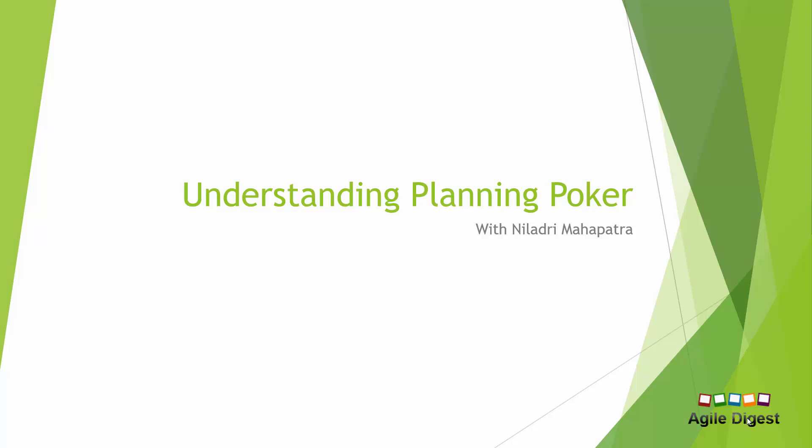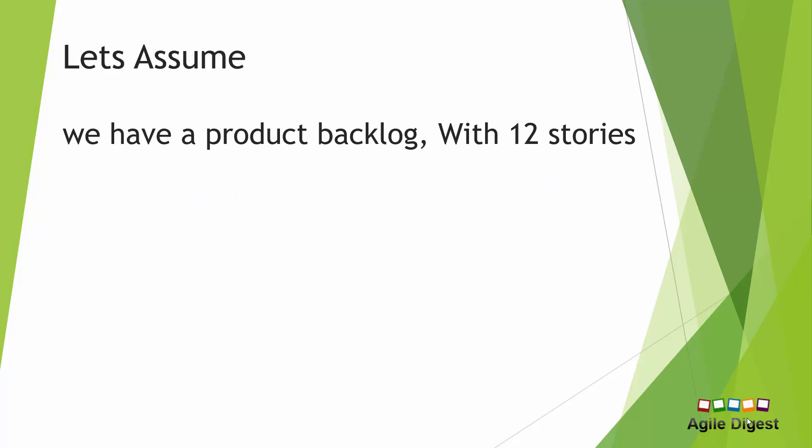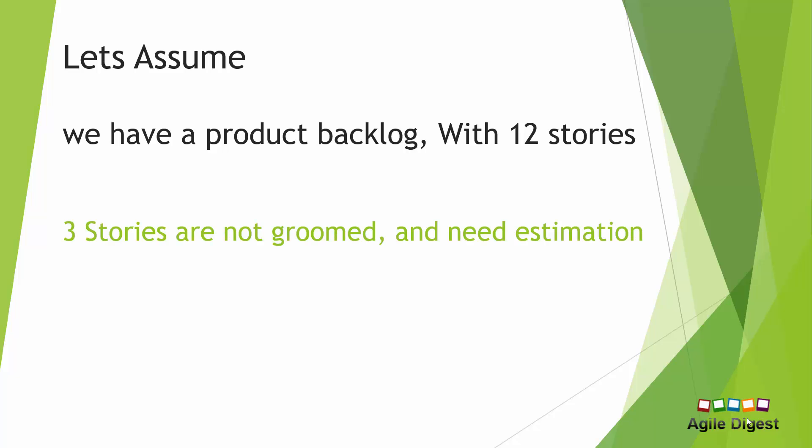Let's start with two assumptions. Let's assume we have a backlog and the backlog has 12 different stories. In those 12 stories, we will target three stories that are not yet groomed — those stories need estimation. We'll do a planning poker to estimate those stories and demonstrate the method that any team can use.